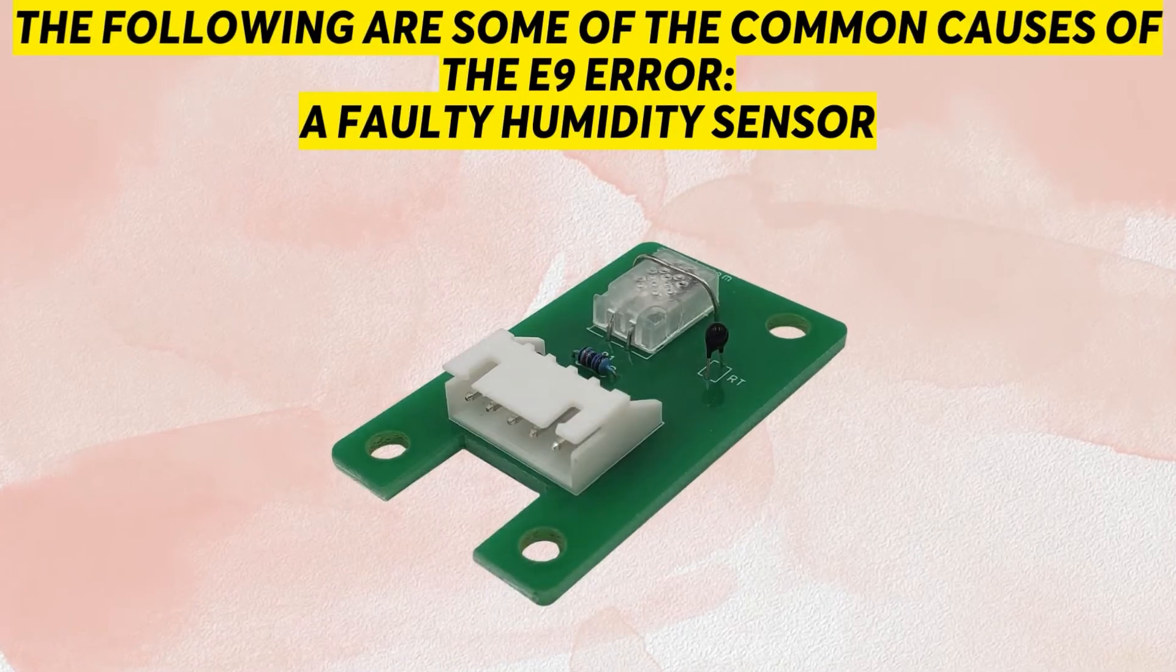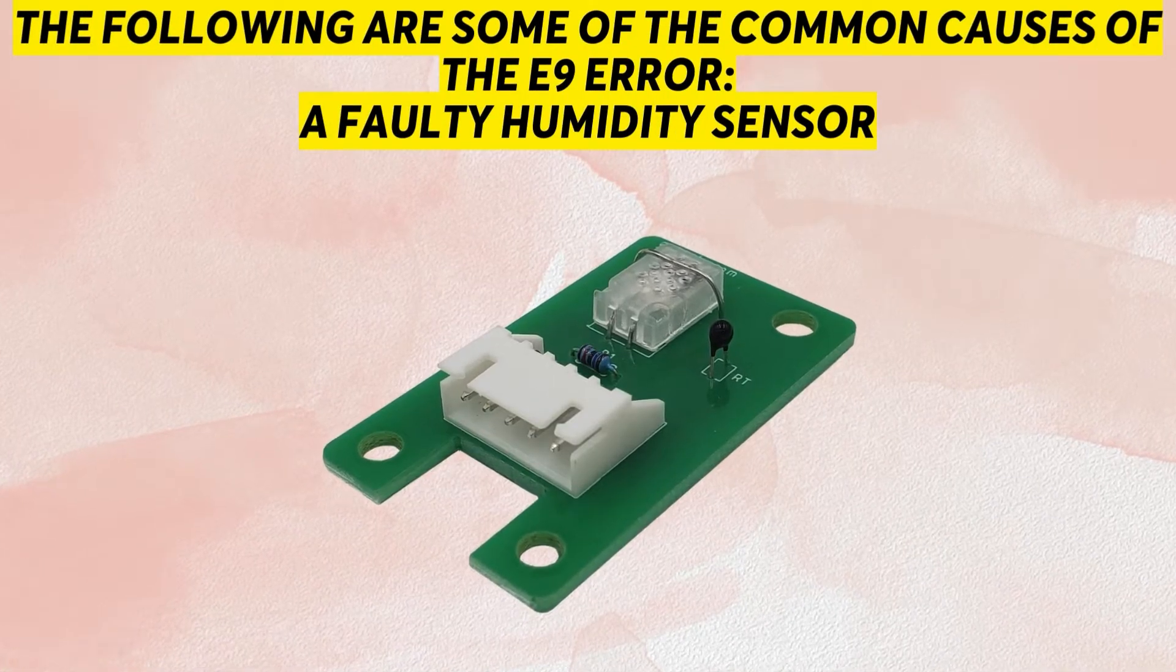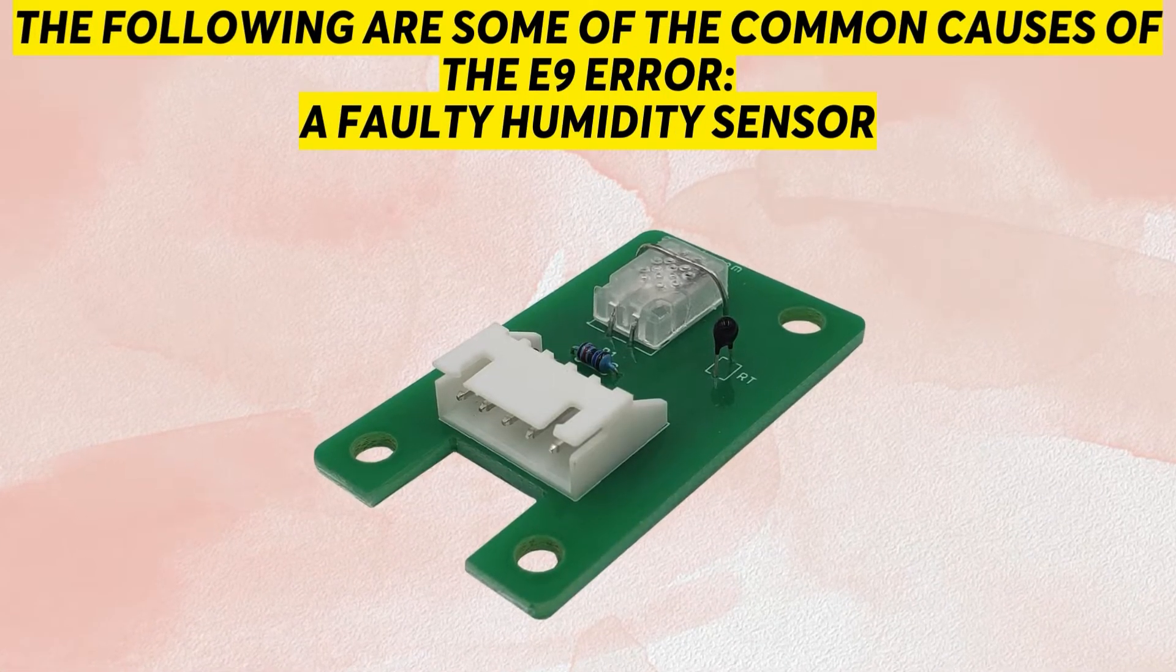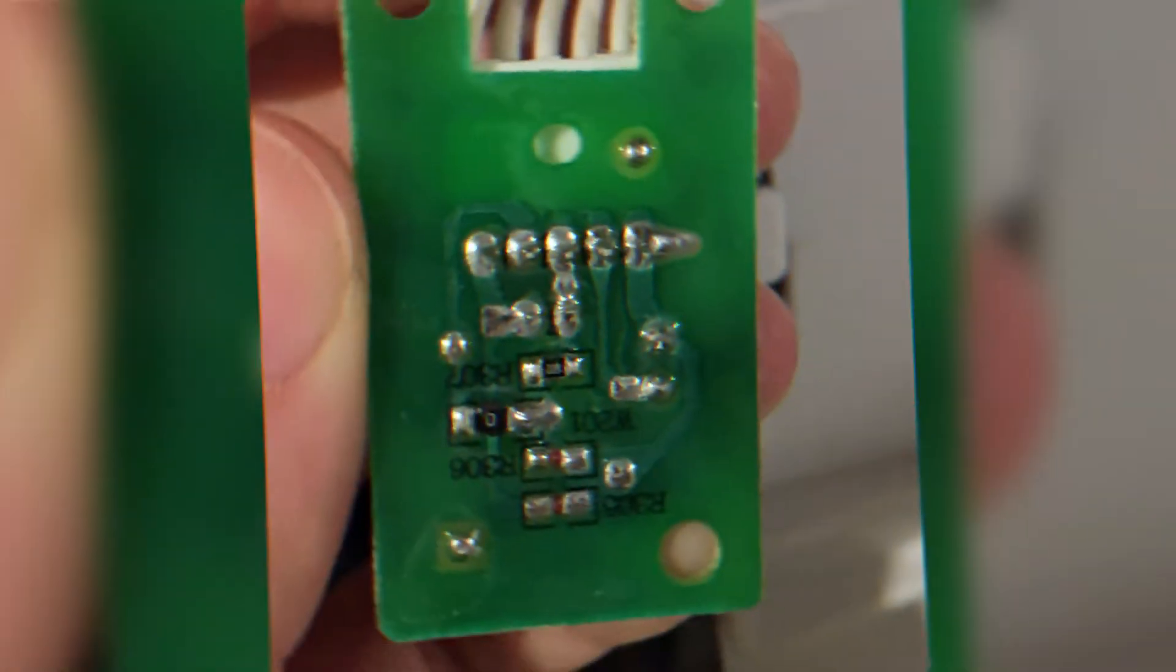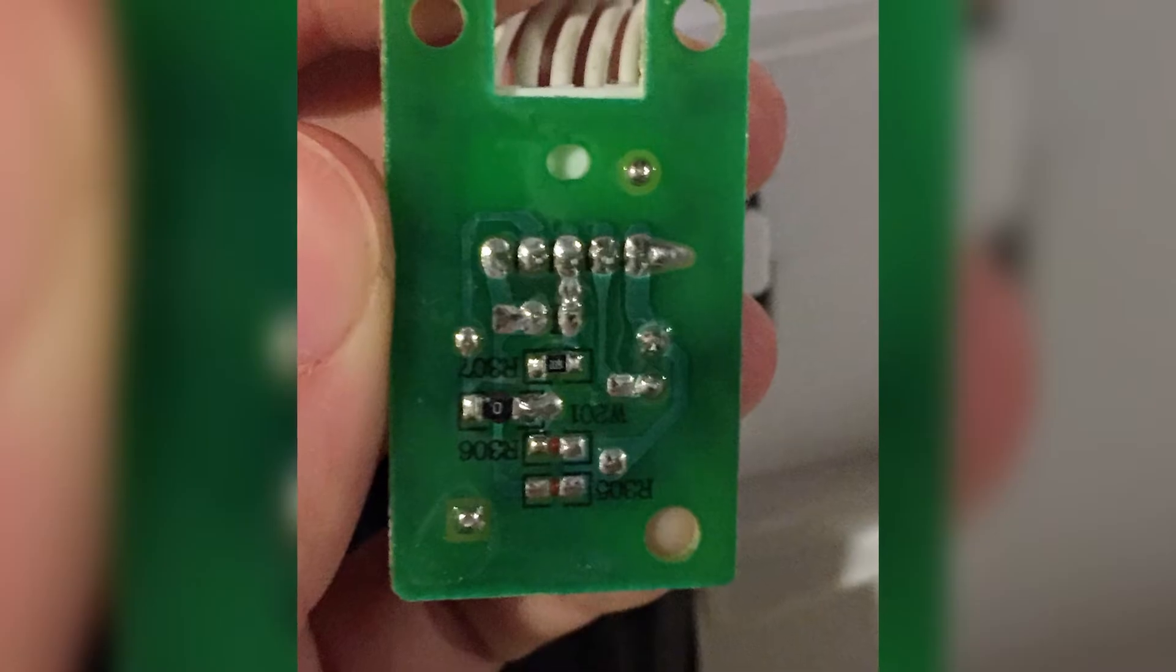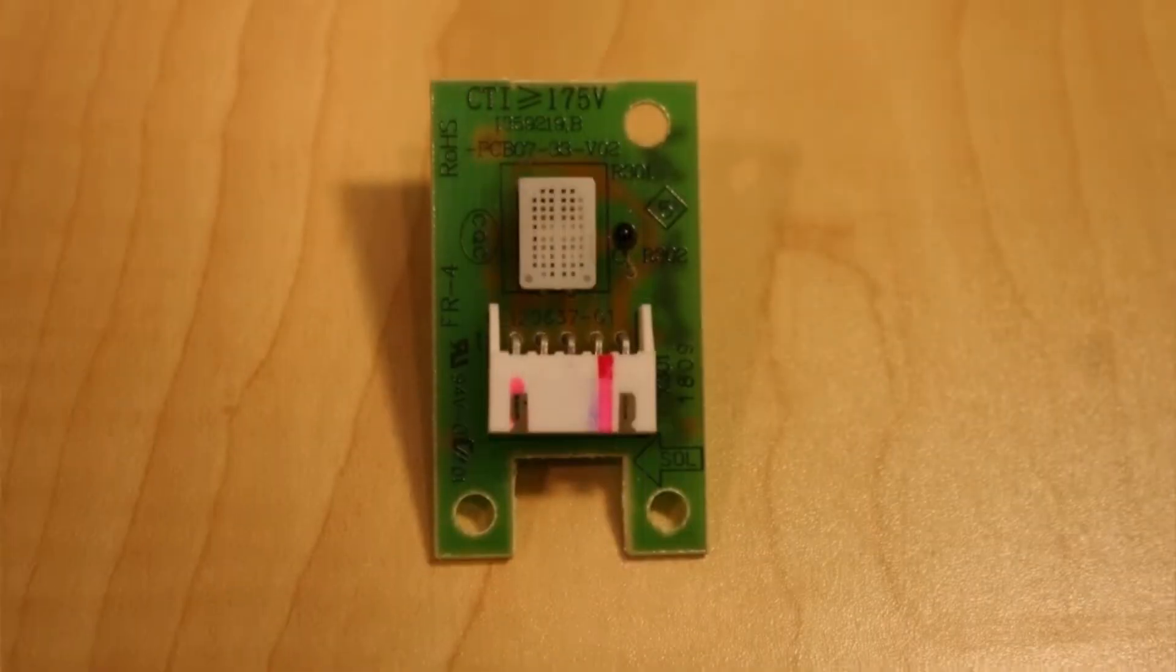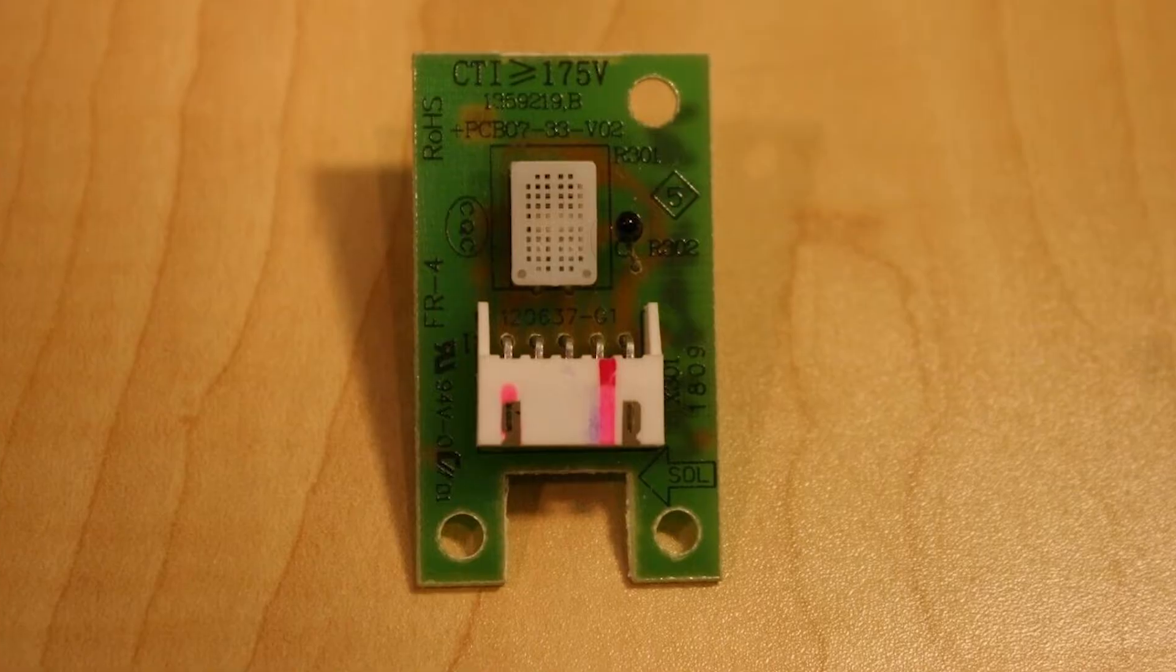The following are some of the common causes of the E9 error. A Faulty Humidity Sensor: When there's a problem with the temperature and humidity sensor, the dehumidifier will display an Error E9 due to the enormous difference in the temperature and multimeter reading of the resistance.